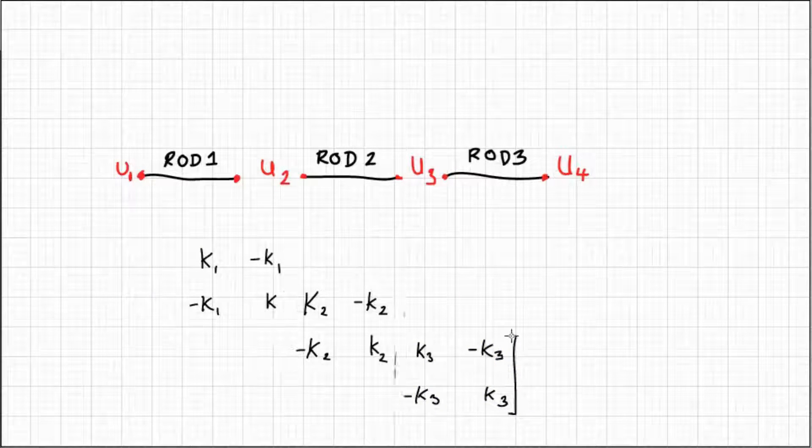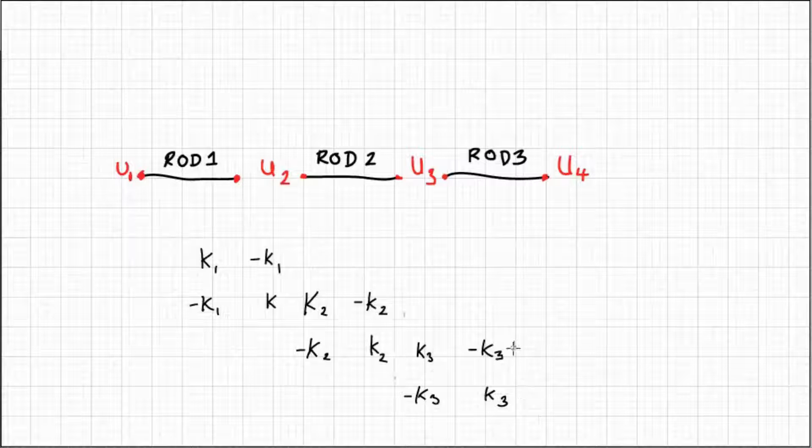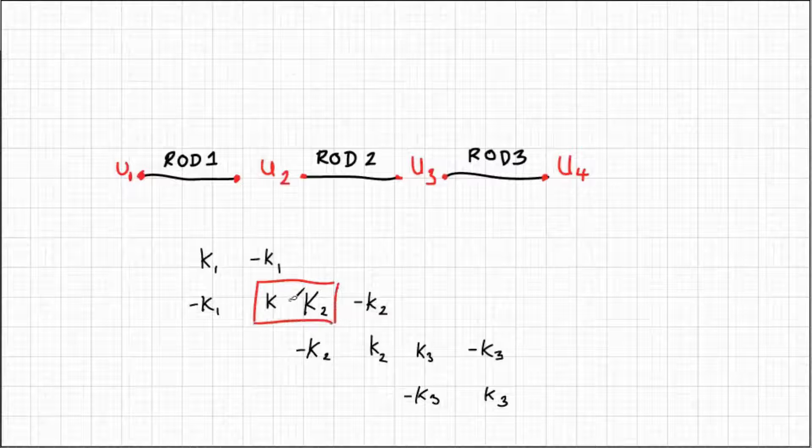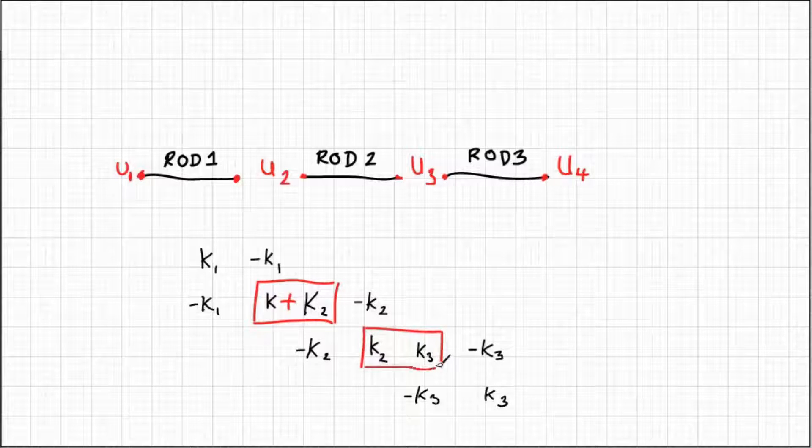Now we can just tidy up the layout of the matrix a little bit, that looks better. We're showing where the stiffness terms overlap, first at degree of freedom u2 and then also degree of freedom u3.